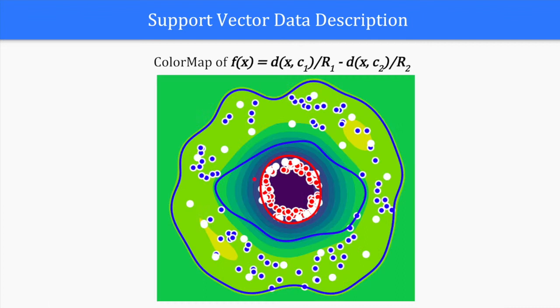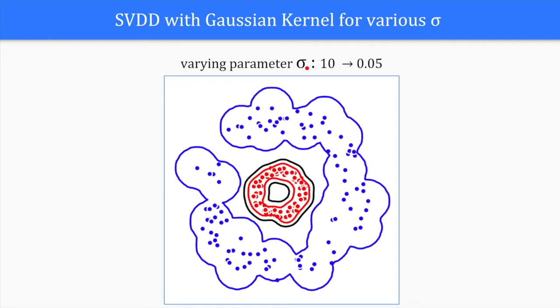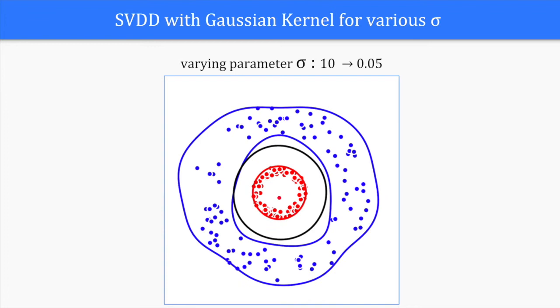Here is the column map associated to the difference of distances to the two centers. Here, we build the decision boundaries associated to the different values of the parameters sigma in the Gaussian kernel. We can see that when sigma is small enough, there is another boundary that appears. Points very close to the origin will be classified as belonging to the external circle.